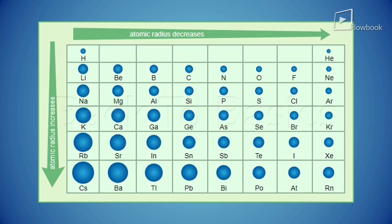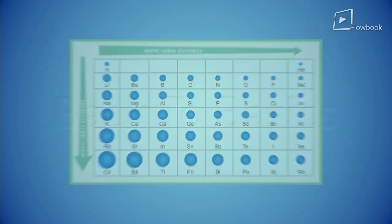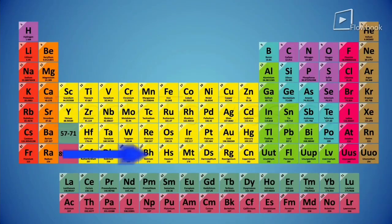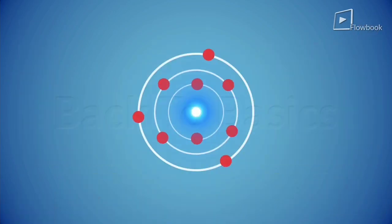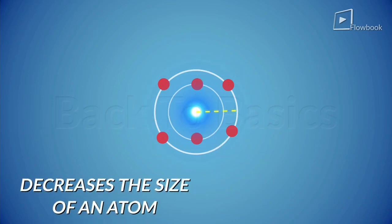And do you know why the atomic size decreases as we move from left to right in a period? Because in a period, as we move from left to right, the nuclear charge of every element is increasing. Now this nuclear charge attracts the electrons towards the nucleus and thus decreases the size of the atom.